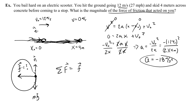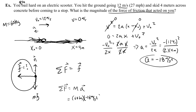Since net force also equals mass times acceleration, and you are 60 kilograms: net force equals 60 kilograms times negative 18 meters per second squared, which equals negative 1,080 newtons. So friction is also equal to negative 1,080 newtons, which makes sense because that friction force is directed to the left.